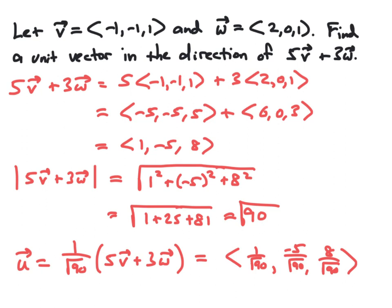To find a unit vector in the direction of that vector, we find the magnitude of 5V plus 3W: the square root of 1 squared plus negative 5 squared plus 8 squared, or the square root of 90. We then scale 5V plus 3W by 1 over the square root of 90, obtaining the unit vector with components 1 over square root of 90, negative 5 over square root of 90, and 8 over square root of 90.